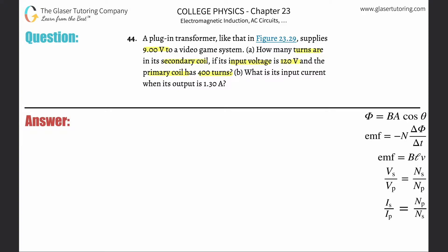So this is a transformer problem and therefore we're going to be using one of the transformer equations. Consider what you're given and it sounds like we're probably going to use this one where it says the secondary voltage divided by the primary voltage should equal the number of turns in the secondary coil divided by the number of turns in the primary coil.